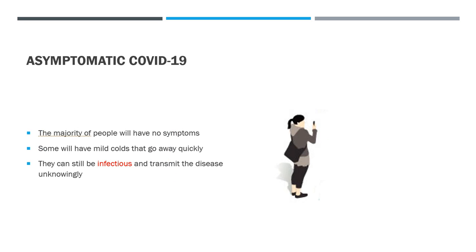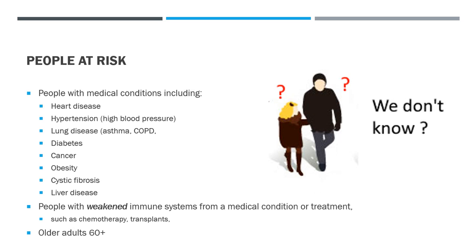You can be asymptomatic with COVID-19. The majority of people will have no symptoms. Some will have mild colds that go away quickly, but they can still be infectious and transmit the disease unknowingly. The people at risk are those with medical conditions including heart disease, hypertension, high blood pressure, lung diseases such as asthma or COPD, chronic obstructive pulmonary disease, diabetes, cancer, obesity, cystic fibrosis, and liver disease.